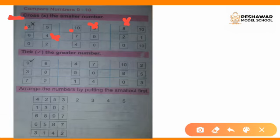2 and 1: 1 is smaller than 2, so we will cross the 1. Then 0 and 2: 0 is smaller than 2, so we will cross the 0. And 0 and 10: 0 is smaller than 10, so we will cross the 0.